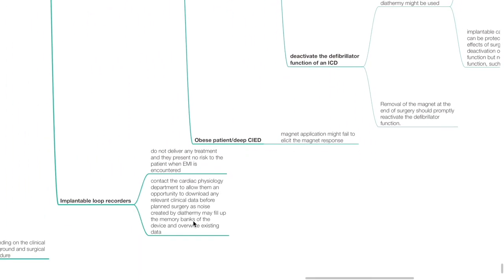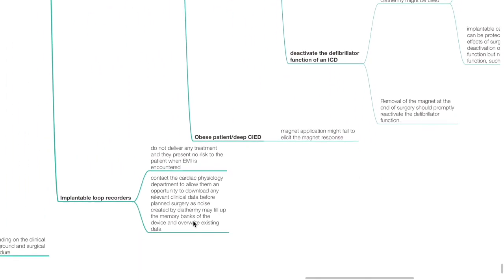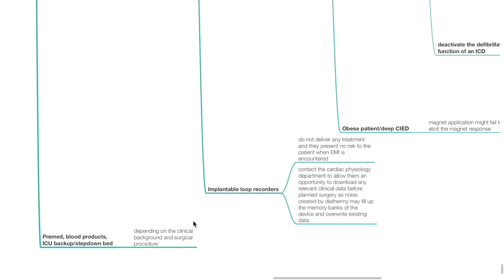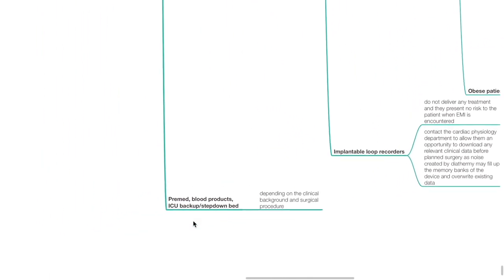Implantable loop recorders do not deliver any treatment and present no risk to the patient when electromagnetic interference is encountered. Contact the cardiac physiology department to allow them to download any relevant clinical data before the planned surgery, as noise created by diathermy may fill up the memory banks of the device and override existing data. Pre-med, blood products, ICU backup or step-down bed depends on the clinical background and the surgical procedure.